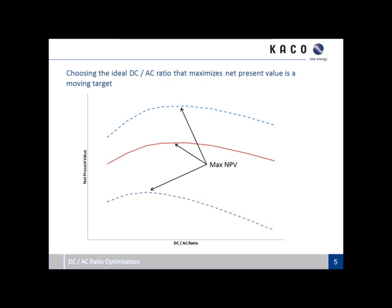The maximum net present value as a function of DC to AC ratio has one peak — there is one optimum condition. But that optimum is going to change based on site-specific conditions. As location changes, as incentives change, as all these variables change, where the max net present value occurs with respect to DC to AC ratio is also going to change.